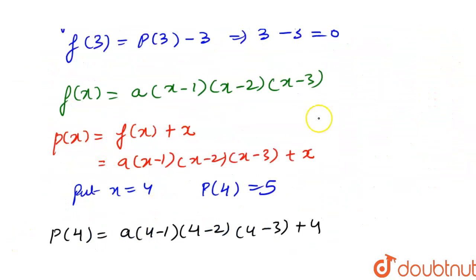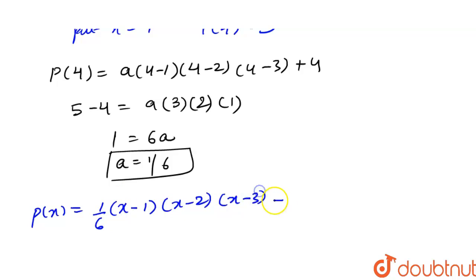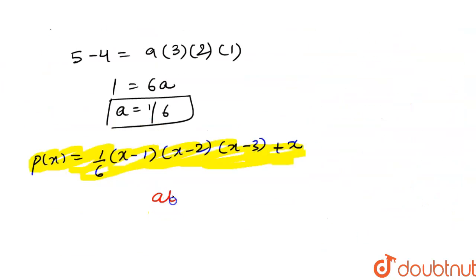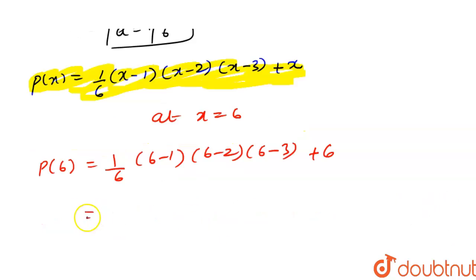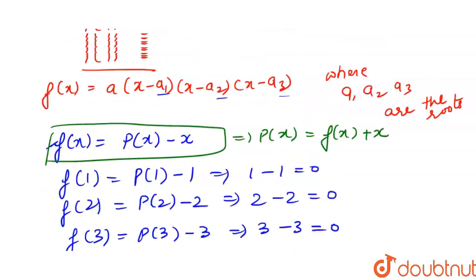Now substituting a = 1/6, our polynomial is p(x) = (1/6)·(x-1)·(x-2)·(x-3) + x. To find p(6), we put x = 6: p(6) = (1/6)·(6-1)·(6-2)·(6-3) + 6 = (1/6)·5·4·3 + 6 = 10 + 6 = 16. So p(6) = 16 is our final answer.